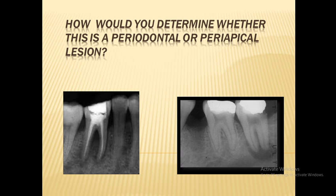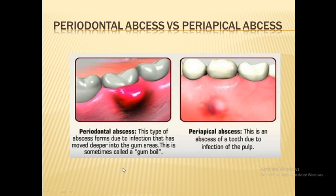Some people don't know how to differentiate between the periodontal and the periapical lesion as they are so close, but I'm going to tell you a very good way to differentiate between them — it's a very common case that comes to the clinic. In a periodontal abscess the abscess is located laterally, while in a periapical abscess it is at the apex.